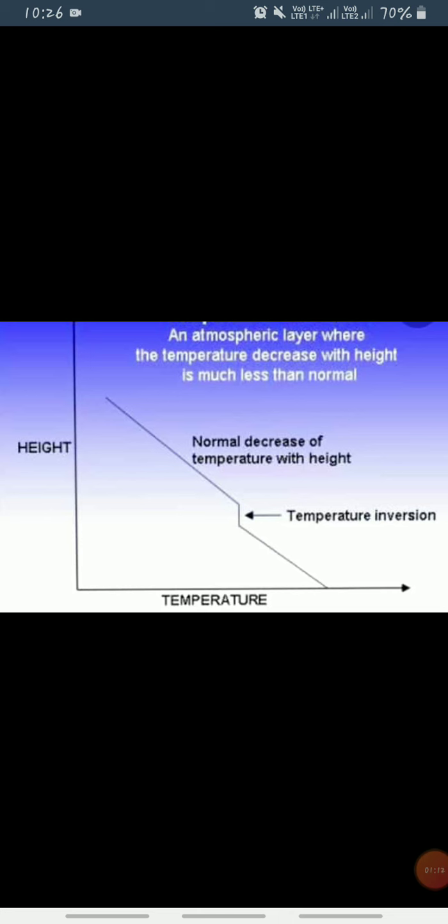...the temperature decreases with height much less than normal. The horizontal line shows the temperature and the vertical line shows the height. Now, as height or altitude increases...